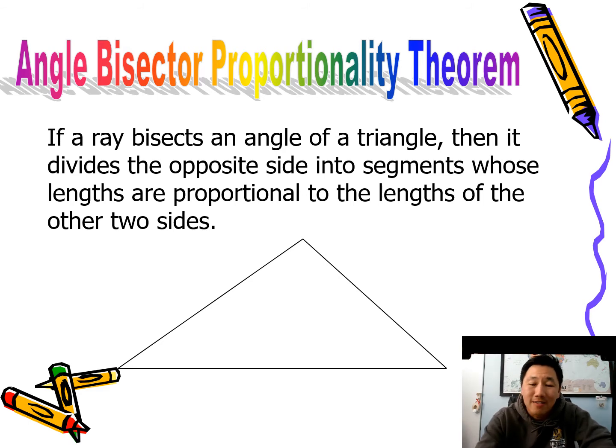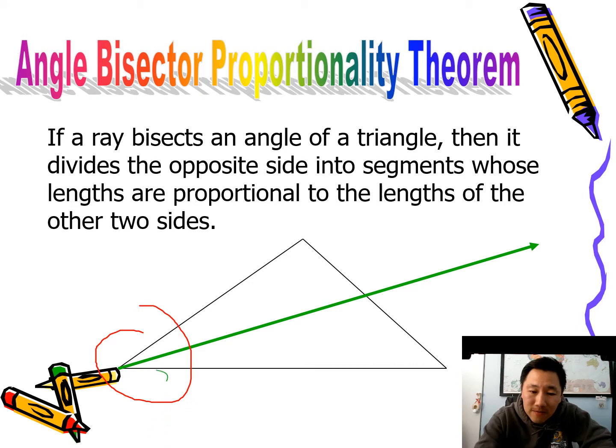So here we have a triangle. Let's bisect it using a ray. We're going to bisect one angle. So there it is, there's a ray and it actually bisects just this angle into two equal angles. That's kind of hard to see, but yeah.